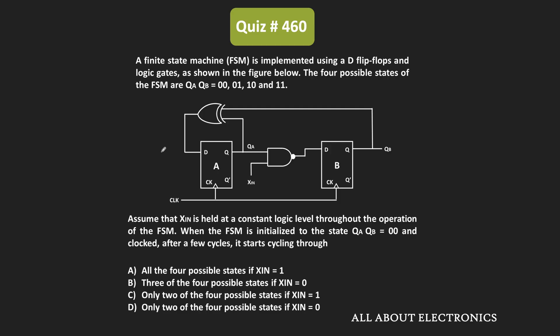Hey friends, welcome to the YouTube channel All About Electronics. In this question, one finite state machine is implemented using the D flip-flops and the logic gates. We have been given that the four possible states of the FSM are 0,0 and 0,1 and 1,0 and 1,1. This input xin is kept at the constant logic level throughout the operation of this FSM.